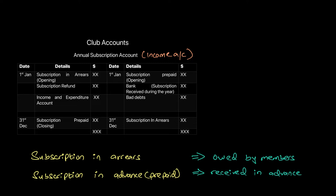With membership fee, two things can happen. Number one, you can have subscription in arrears, which means that some members have not paid their outstanding membership fee — this fee is still owed by members. For the club, if the subscription fee is outstanding and they expect to receive it in the future, this classifies as an asset. Subscription in arrears would therefore be an asset for the club.